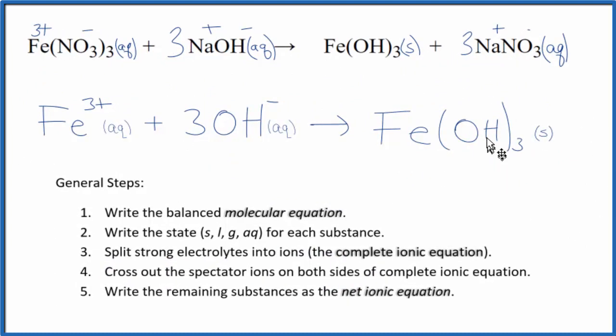And this is the net ionic equation for iron 3 nitrate and sodium hydroxide. You'll notice I have three hydroxide ions here. I have three of them here. I have an iron atom and an iron atom. And if you look, the charge is conserved as well. I have a 3 plus here, three times the negative hydroxide group. Those balance out to give us a neutral compound.